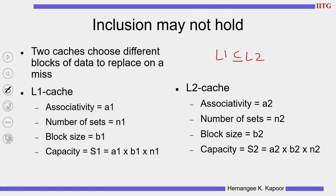Here we have two caches L1 and L2 with defined terms: A1 is associativity of L1, N1 is number of sets, B1 is block size, so the total capacity is A1×N1×B1. Similarly for L2: A2, N2, B2, with capacity A2×N2×B2. Let us understand why inclusion may not hold in normal cases. We have both caches as set associative, and whenever L1 wants to evict a block, it evicts based on the history of accesses — the popular LRU-based policy.